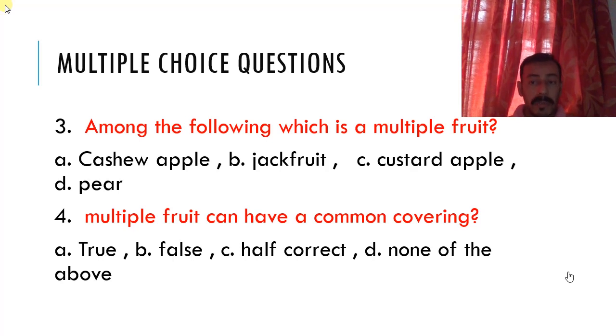Among the following which is a multiple fruit? Cashew apple, jackfruit, custard apple, pear. What's your answer? Just write it down. Option four. Multiple fruit can have a common covering. What is your opinion? Is it true? Is it false? Half correct? None of the above.